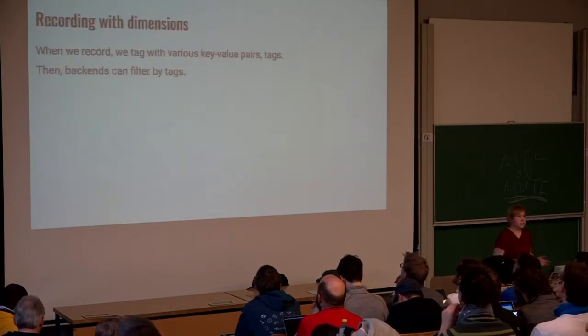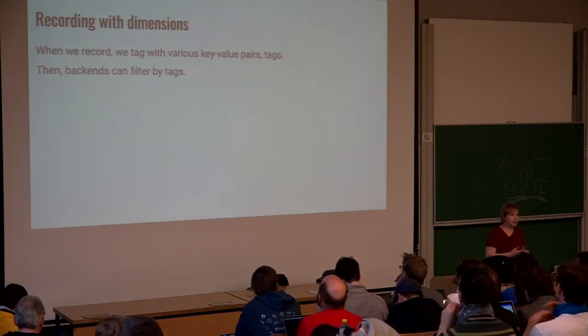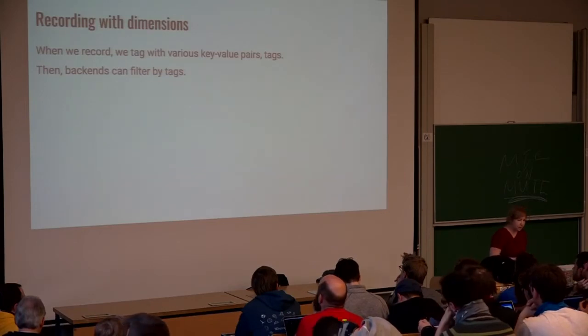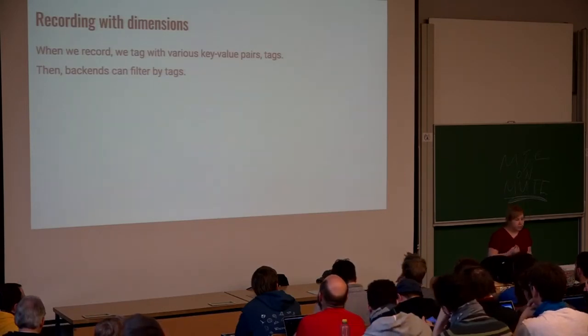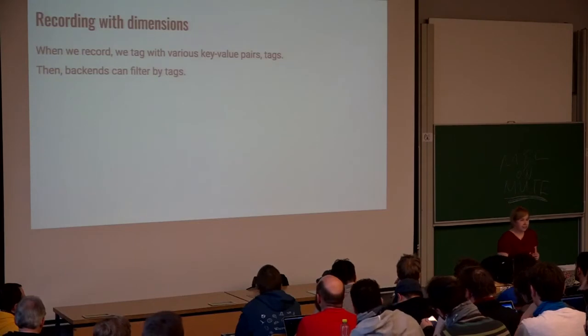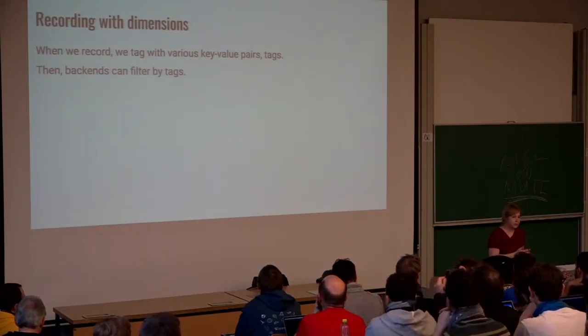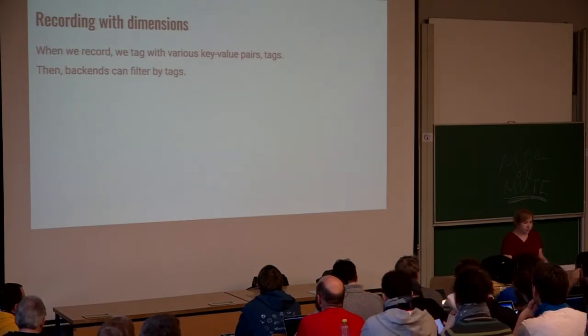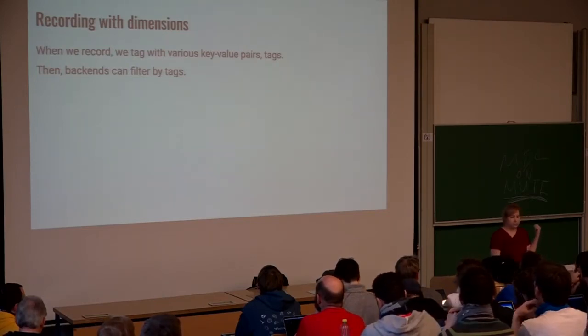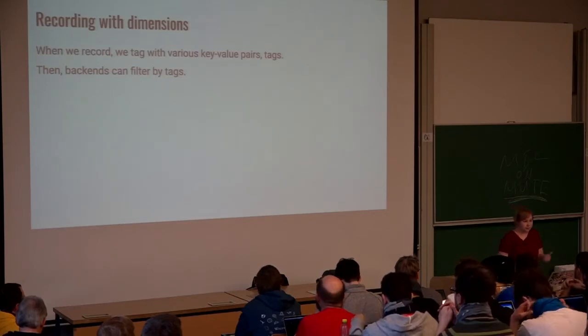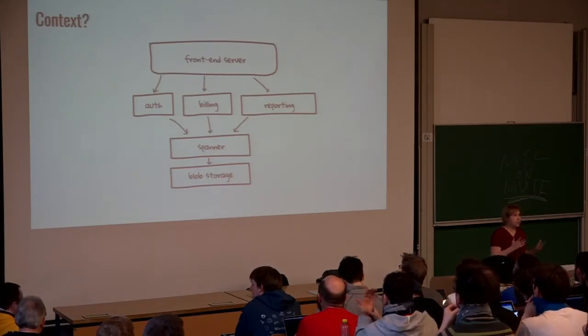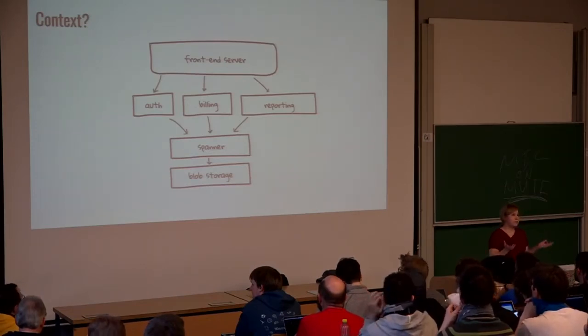So it's great that we can query this data. But how do we really collect signals in order to be able to query them this way and break down? The answer is we record the data with various key value pairs. We call these key value pairs tags. And then the back-end, for example, a metric collection back-end such as Prometheus can filter data by tags.